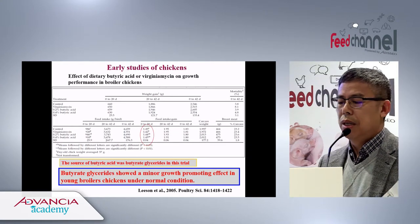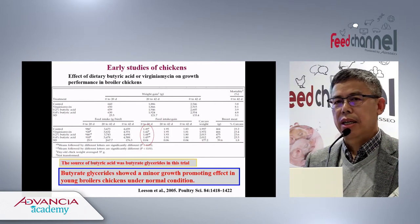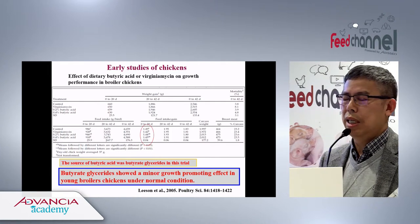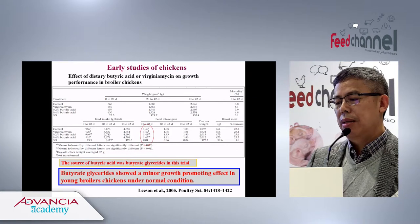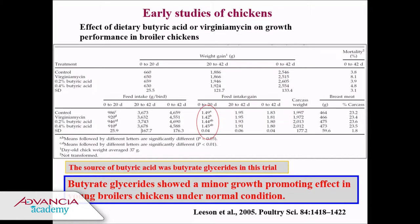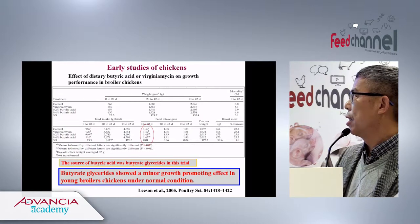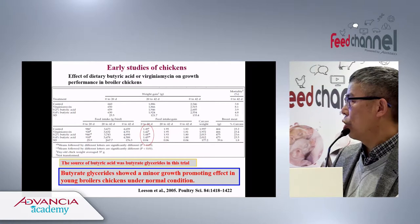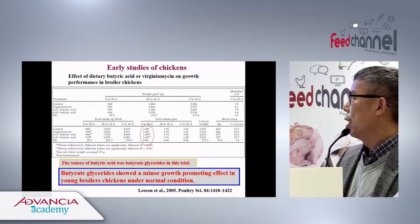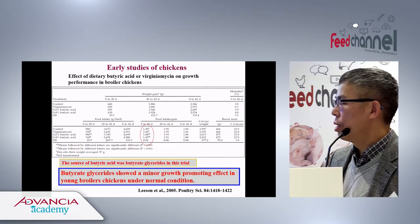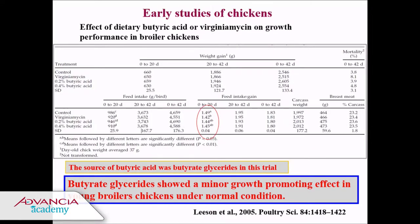Previous studies done by Steve Leeson at the University of Guelph — he was a pioneer in this work — found that adding butyrate glycoside to feed can improve animal growth performance. Looking at the feed conversion ratio, the control was around 2.45, the antibiotic group was lower, and when adding 0.2% or 0.4% butyric acid, the feeding efficiency was almost as good as the antibiotic group.